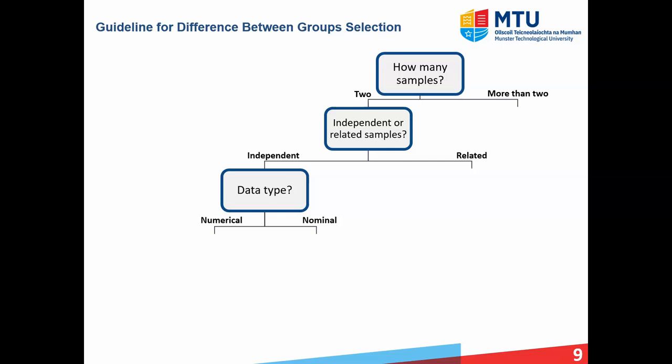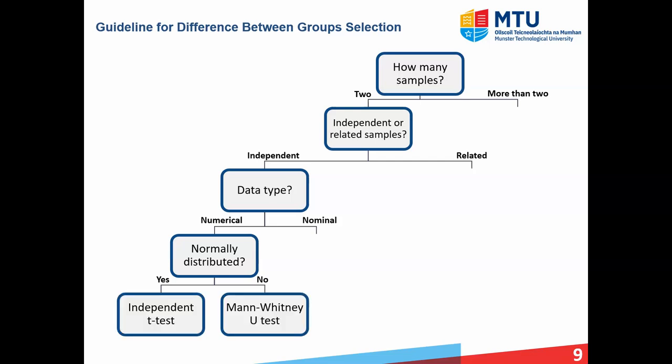Moving down through the independent side, we again consider the data type — numerical or nominal — and then for numerical data, whether it is normally distributed. If the data is normally distributed, we can perform an independent t-test, which assesses if there's a significant difference between the means of two independent groups. For example, a researcher wanting to assess if there's a significant difference in exam scores between students attending traditional lectures and those in an online program would collect scores from both independent groups and compare the means.